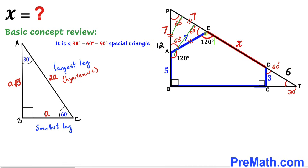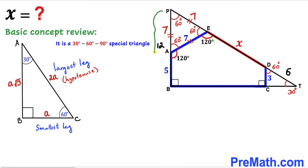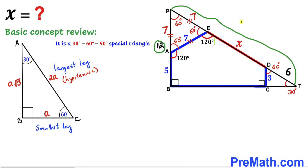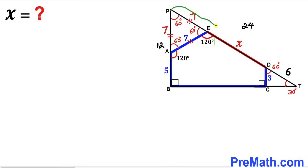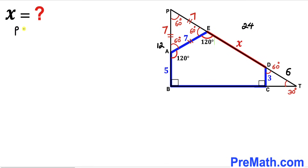Now let's focus on the big right triangle PBT. Side PB is the smallest leg and side PT is the longest leg. Since the longest leg is twice the smallest, and PB is 12, then PT must be 24 units.